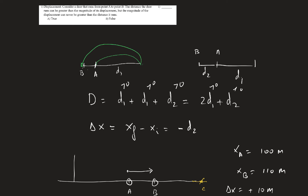This question is about displacement. It's about a deer that runs from point A to B. The distance it runs can be greater than the magnitude of its displacement, but the magnitude of the displacement cannot be greater than the distance it runs. The displacement from A to B will be a negative displacement, and the magnitude of the displacement is always a positive quantity.